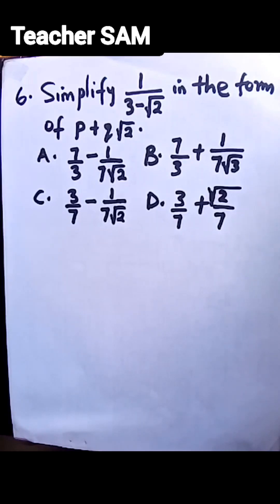Option C: 3/7 - 1/(7√2). Option D: 3/7 + √2/7. So we have this, let's go straight into the work.